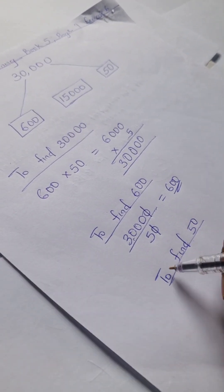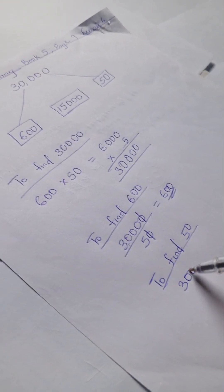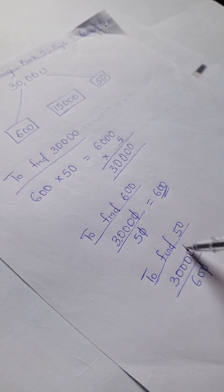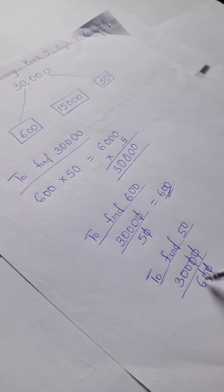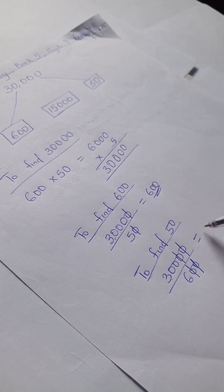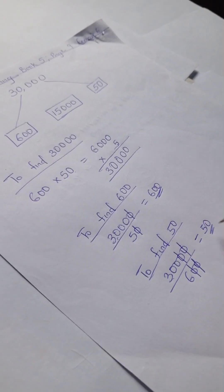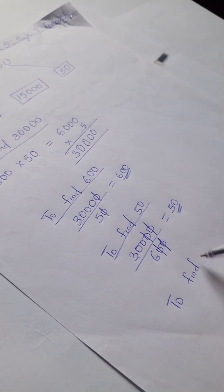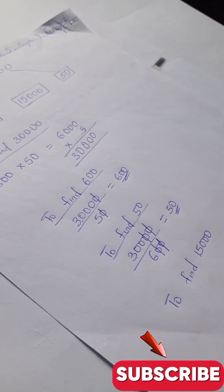And to find 50, we're going to have 30,000 divided by 600. So this will cancel this, this will also cancel this, and we have 300 divided by 6, we have our 50.